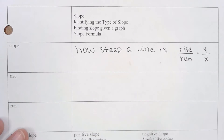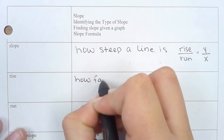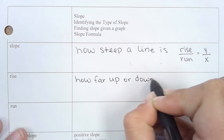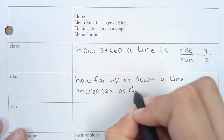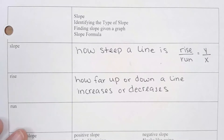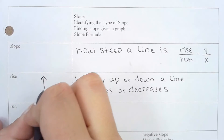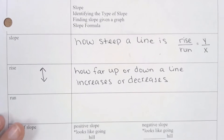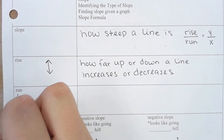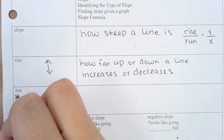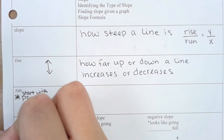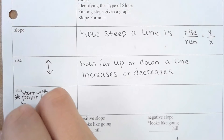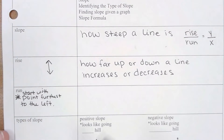When we say rise, what does that mean? When we're rising, we're talking about how far up or down a line increases or decreases. When we're talking about running, when you're finding slope from a graph, you always start with the point furthest to the left, and from that point you are always going to be running to the right.